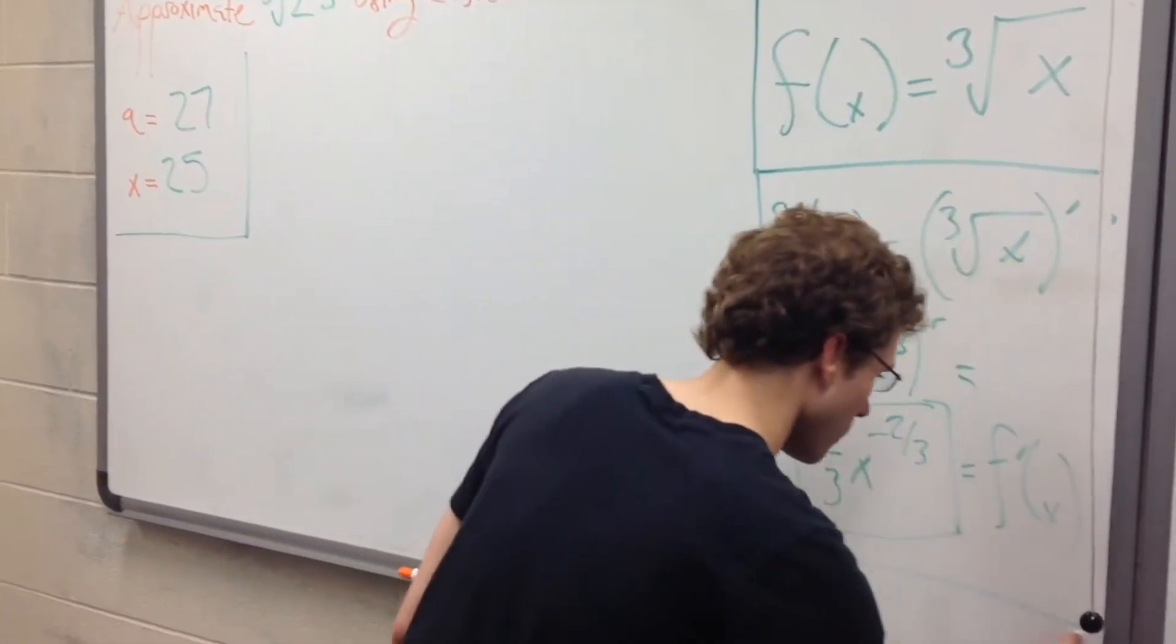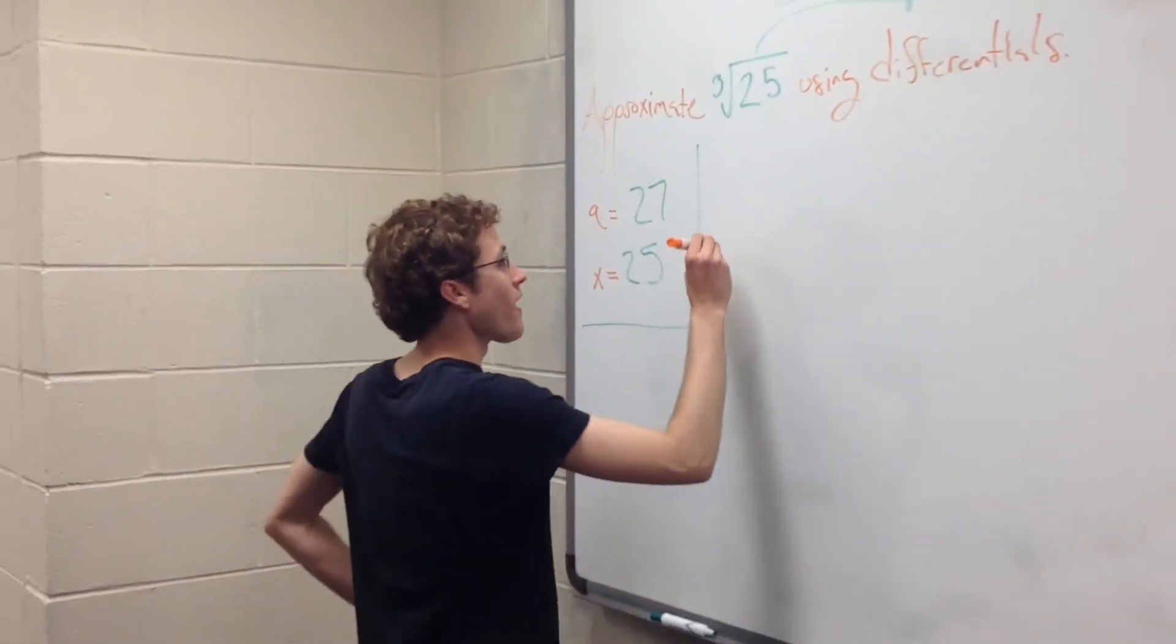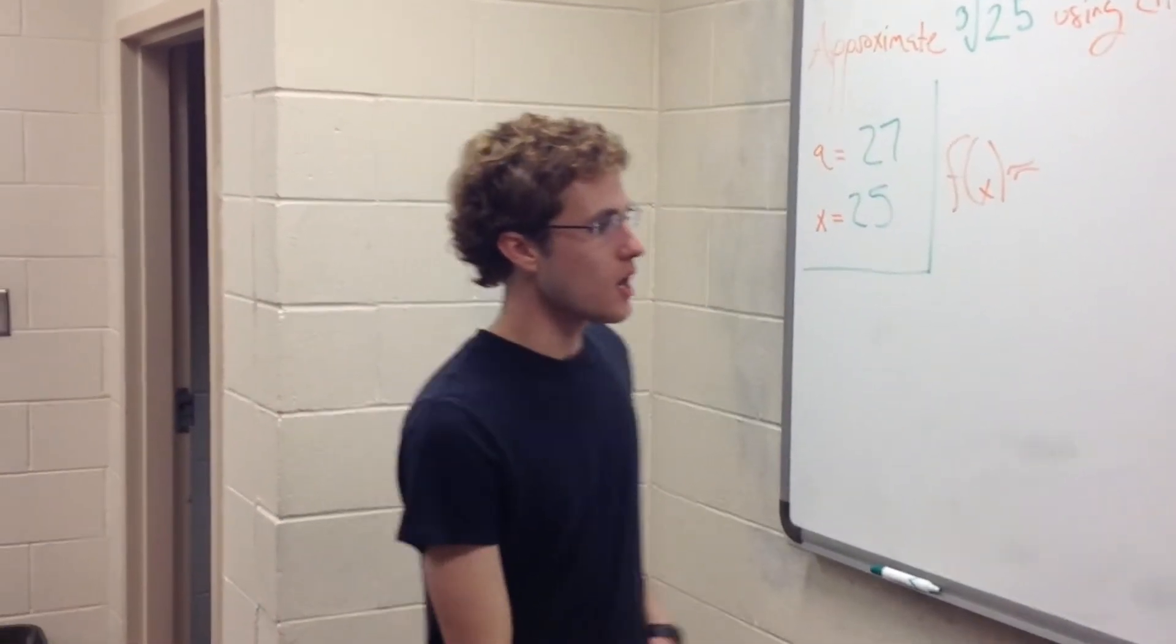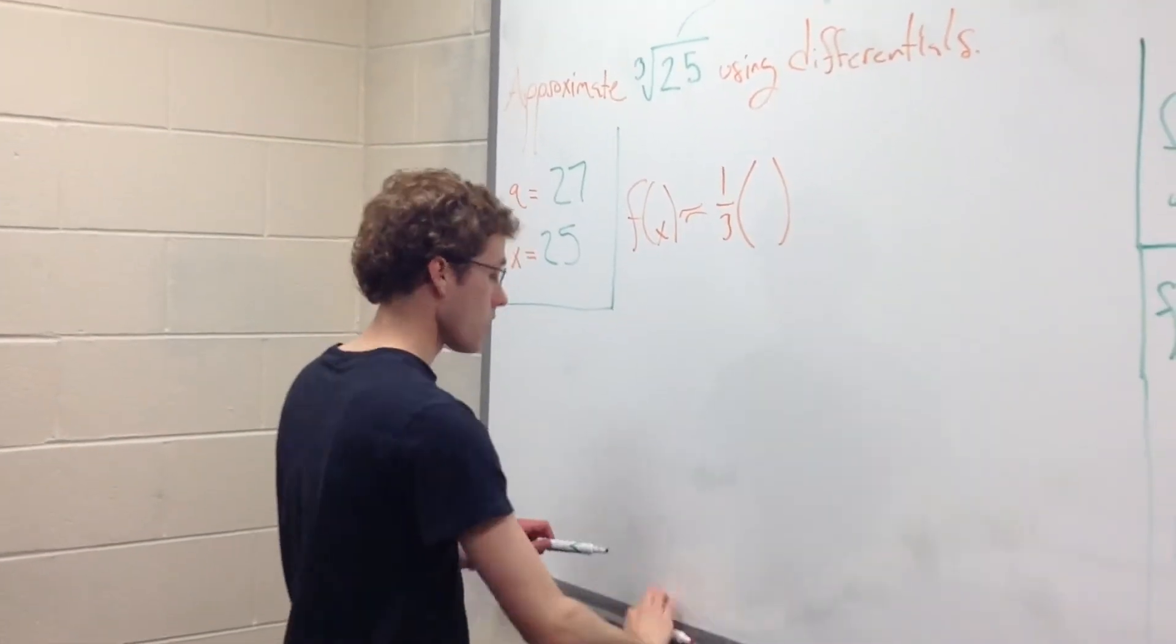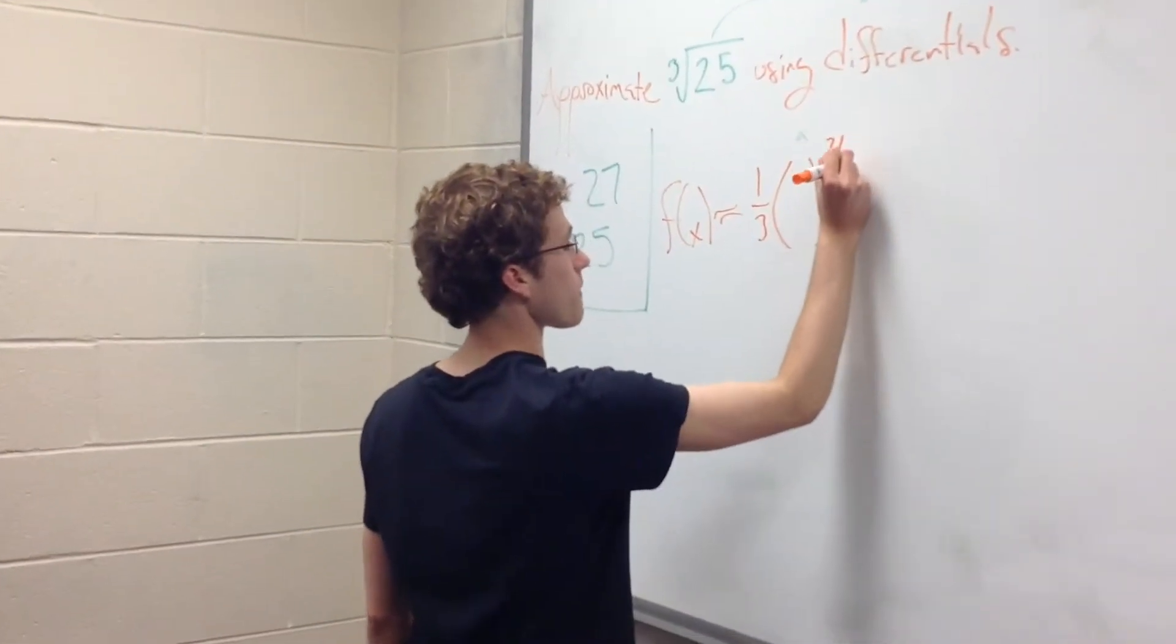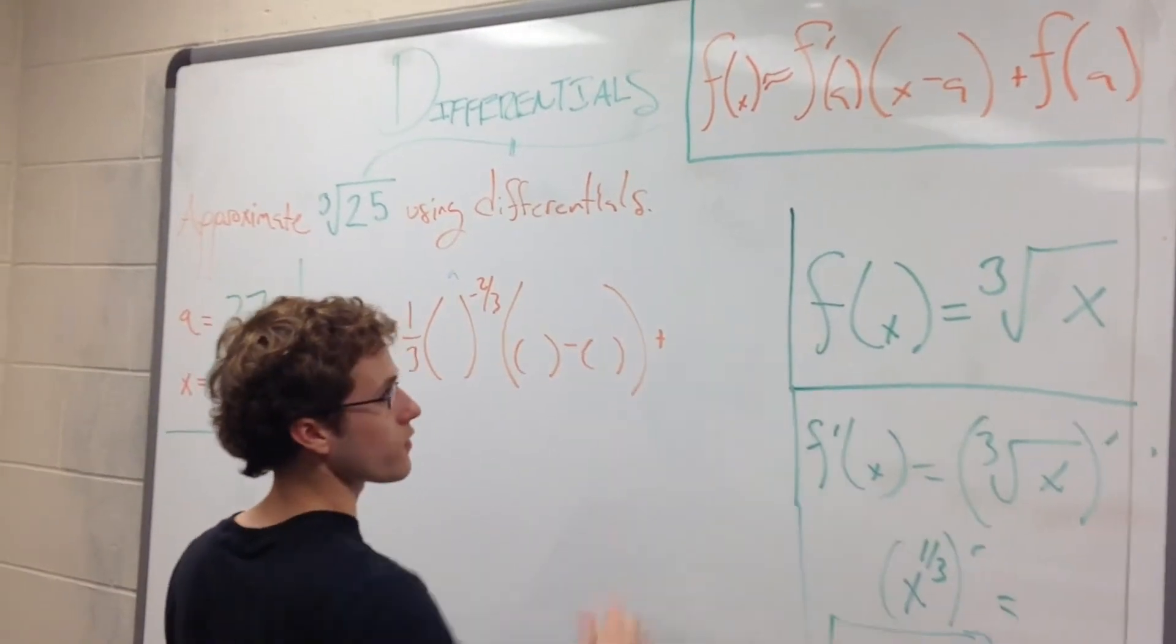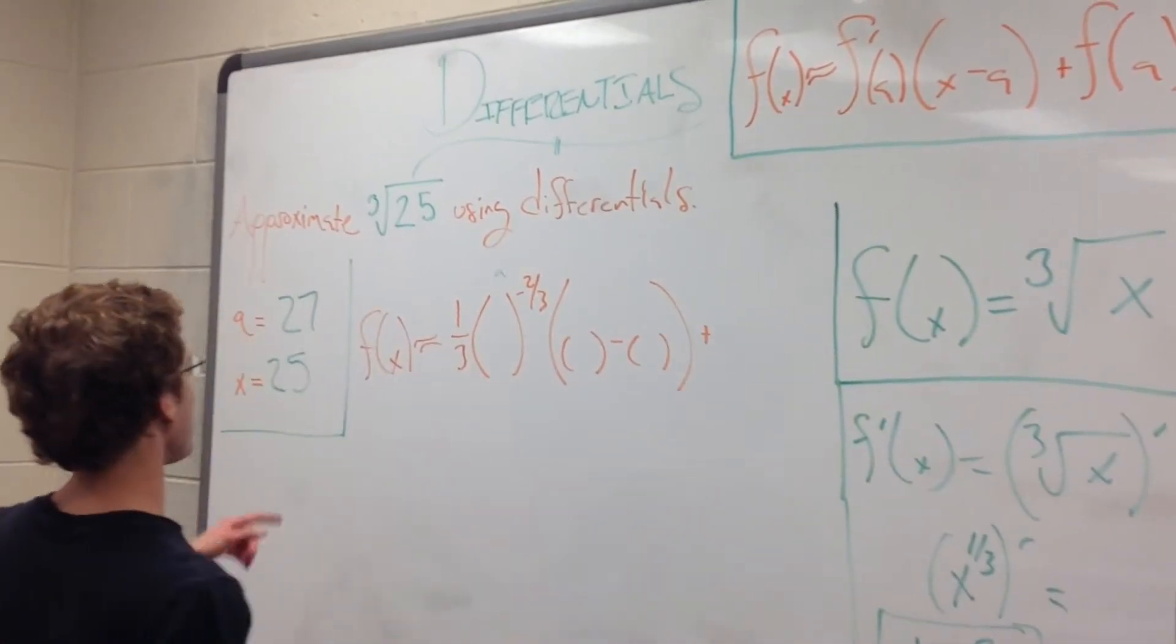Alright, so now we have all of those values. Let's start plugging things in. So f of x is approximately equal to f prime of a. All right, so here's our original equation. So one-third of a to the negative two-thirds times x minus a plus f of a. It's f of x right here, we're just going to pretend like this is a. We'll put in our a, we'll put in 27.